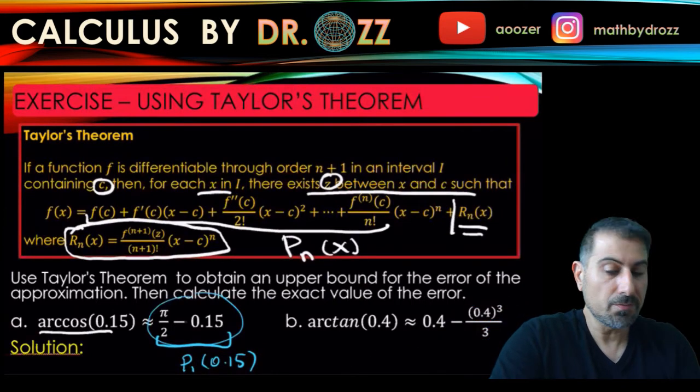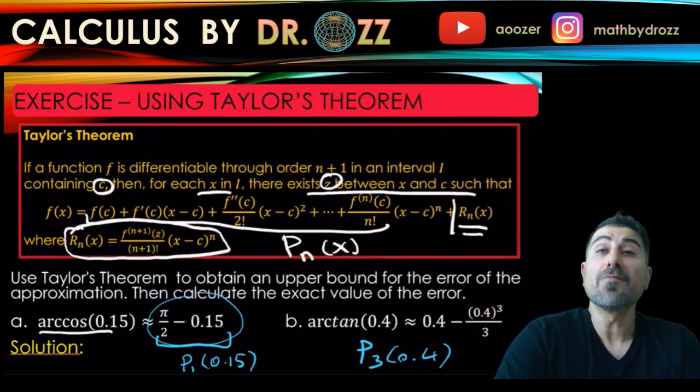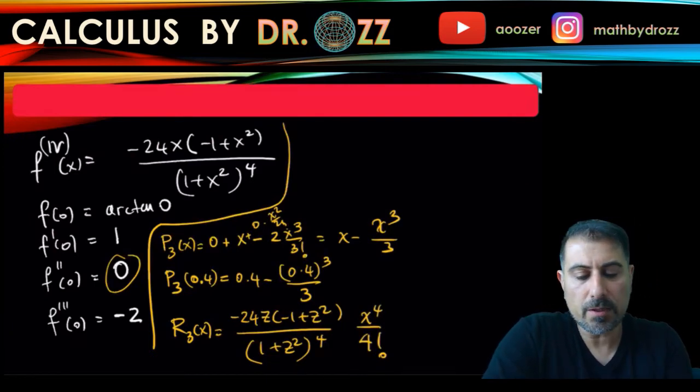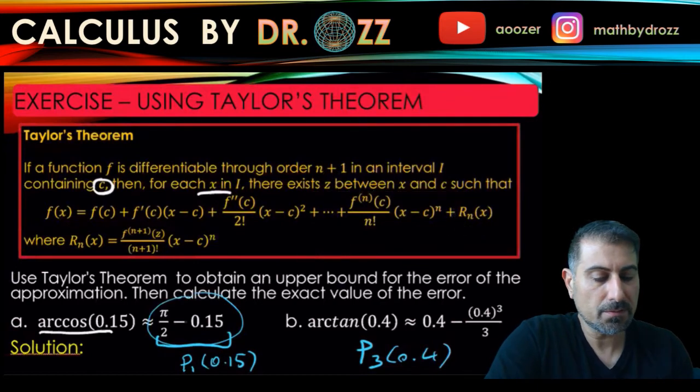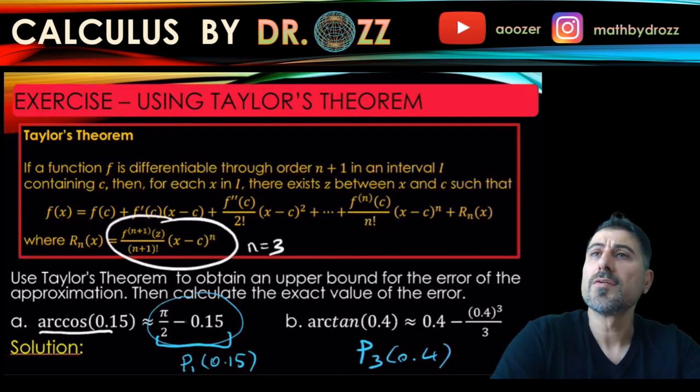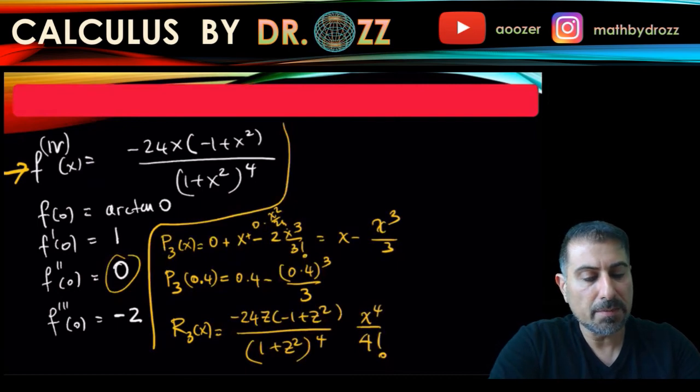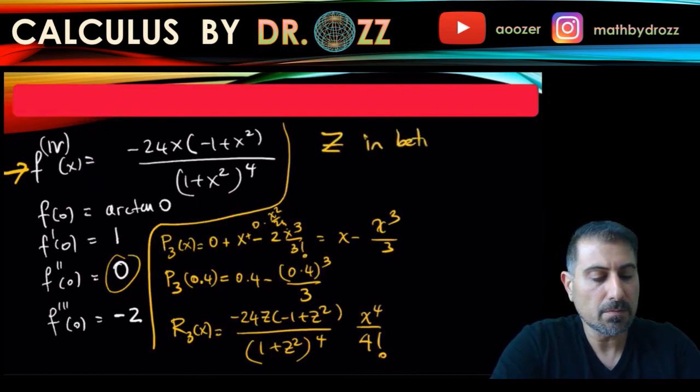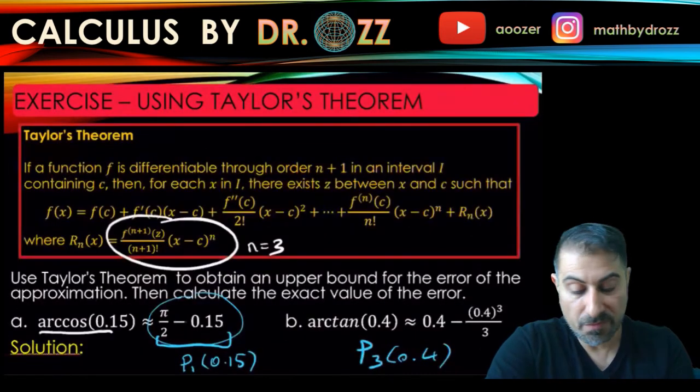So this is p3 of 0.4. Now I want to write R3 of x, because we are going to find an upper bound for R3 of x. Just copying the description of the fourth derivative here and plugging it back into this description. I'm writing this for n equals 3, so the fourth derivative evaluated at z, the bottom is 4 factorial, c is 0, x to the fourth. So this is exactly what we get here. And z is in between zero and 0.4.